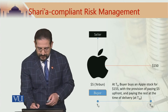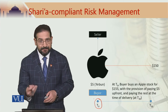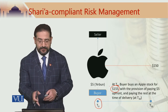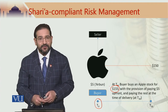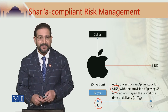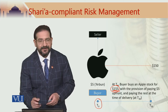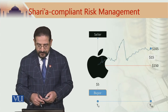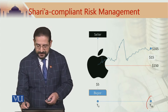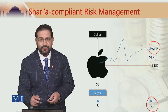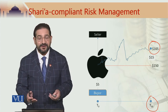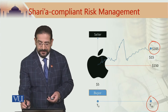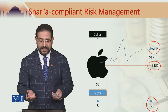At T0, the buyer buys an Apple stock for $155, with the provision of paying $5 upfront and paying the rest at the time of delivery at T30. In this case, the price is $155, out of which $5 has already been paid. Like the previous example, if at T30 the price of Apple stock has gone up to $165, the buyer who has paid Arboon — the option holder — would strike and pay the rest of the amount, which will be $150, and confirm the sale.